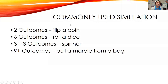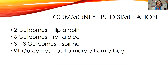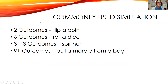Some commonly used simulations: for two outcomes, we flip a coin. For six outcomes, we roll a dice. For three to eight outcomes, a spinner. For nine or more outcomes, we pull a marble from a bag. Or we can use a combination of outcomes — but for now, let's jump right into an example.